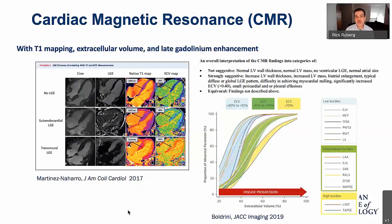The next test many cardiologists would reach for is cardiac MR — tremendously useful, an indispensable test. Depending upon the age of the patient, it may be the next appropriate test. For older patients I would argue ATTR screening with PYP imaging is probably next best, but for a younger person or someone in whom you're suspicious of AL amyloidosis, CMR is definitely the next test. With CMR, we can characterize tissue in a way we cannot with echo, by means of T1 mapping, extracellular volume determination, and late gadolinium enhancement.